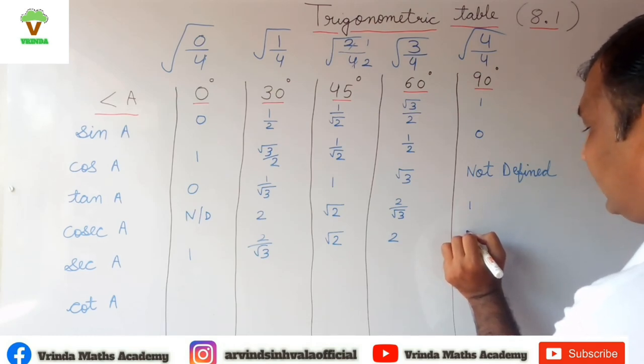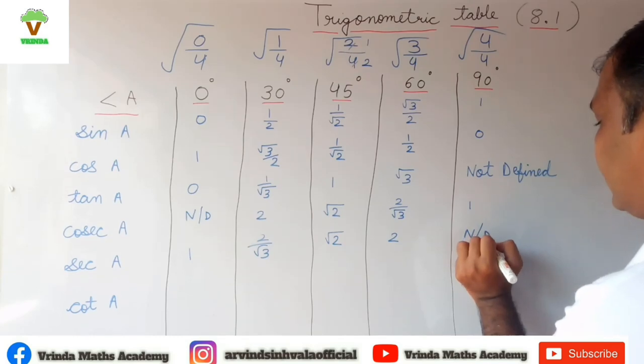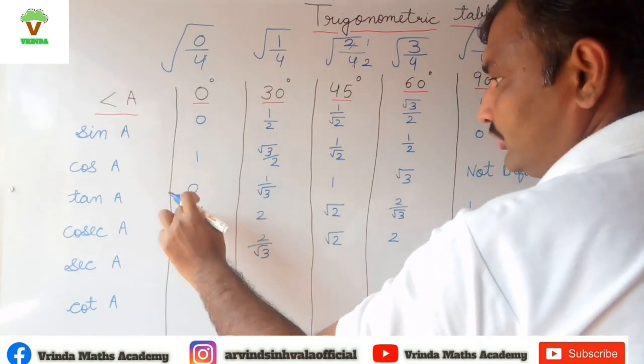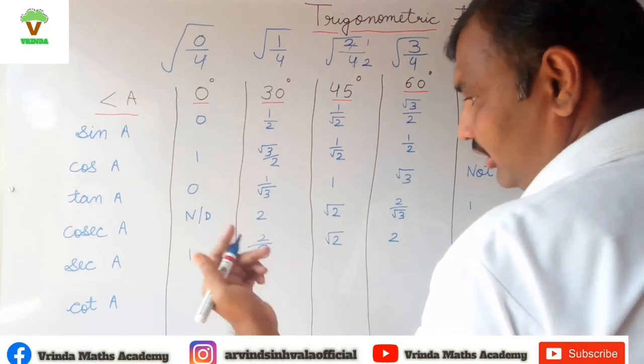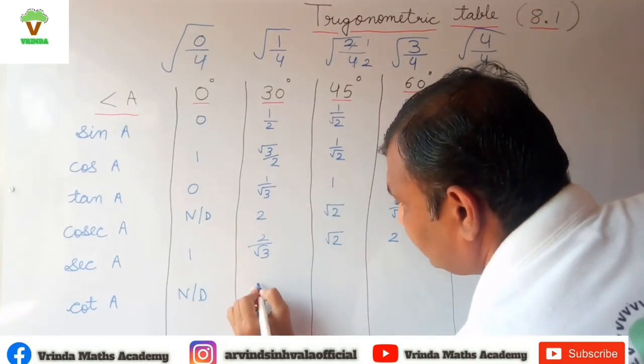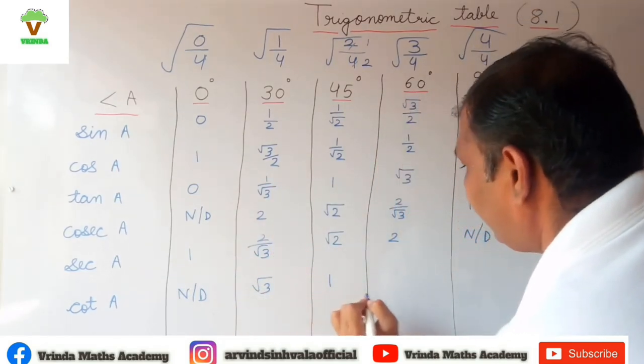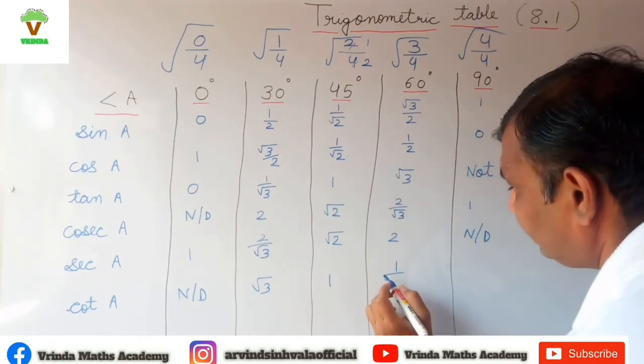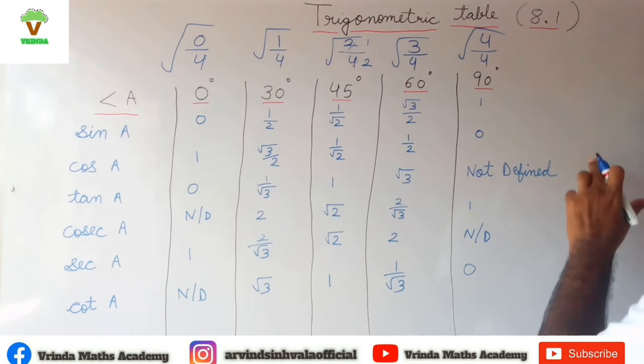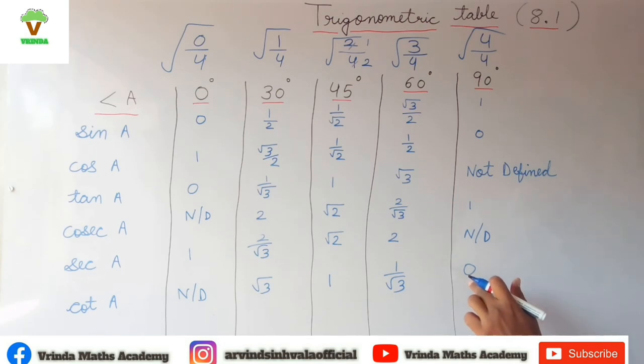And last, cot. Cot is 1 upon tan. So 0 upon 1 reciprocal is 1 upon 0, that is not defined again. Root 3 upon 1 is root 3, 1 remains 1, root 3 upon 1 means 1 upon root 3, and here not defined means 1 upon 0, and reciprocal of 1 upon 0 is 0 upon 1, so we get 0. So in this way you can easily remember the trigonometric table.